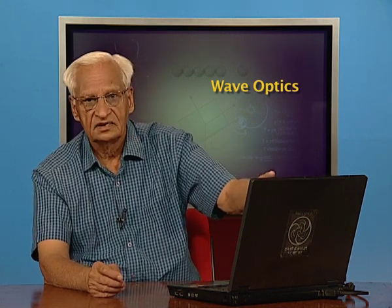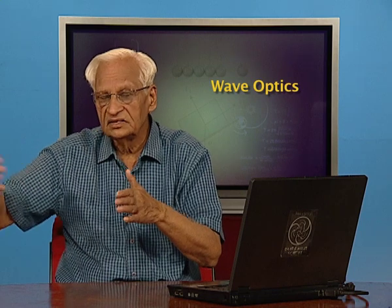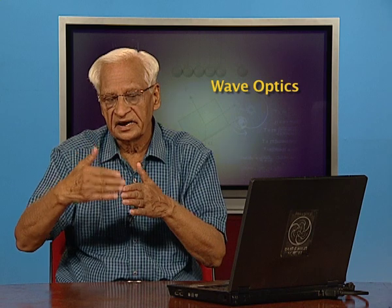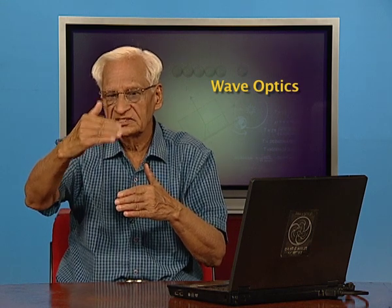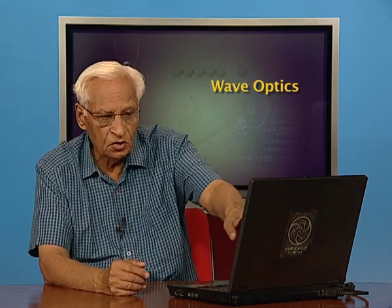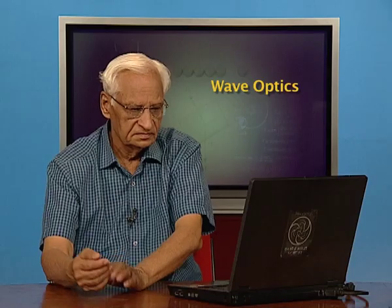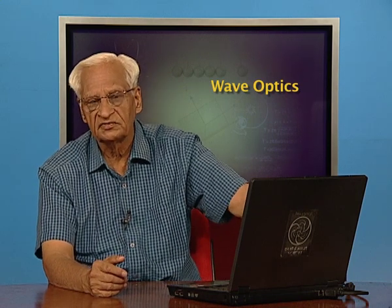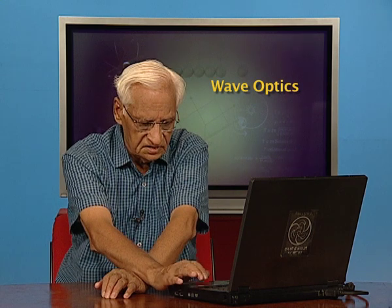An example of a coherent source is laser light. In laser light, all the atoms are made to jump from a higher to a lower energy level simultaneously. Therefore all the waves are no longer independent — they are generated by electrons falling together from one state to another, and these waves are all in phase. Laser light is a source of coherent light, and is commonly used in the lab for interference and diffraction experiments because of this property.